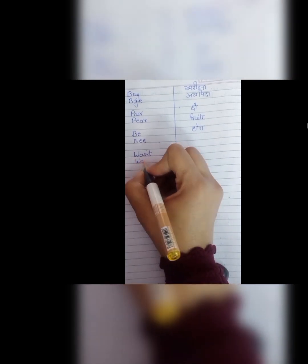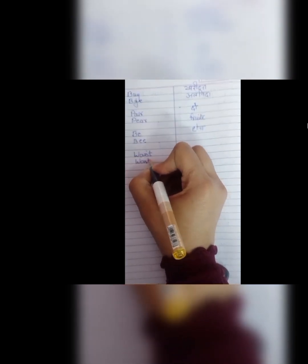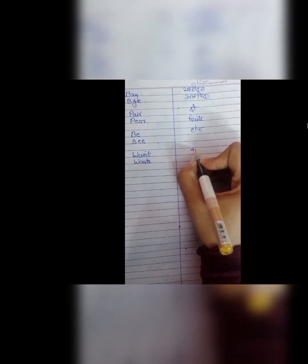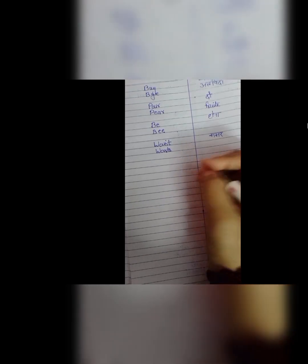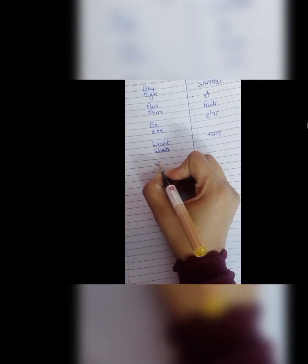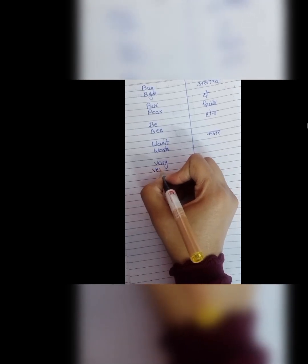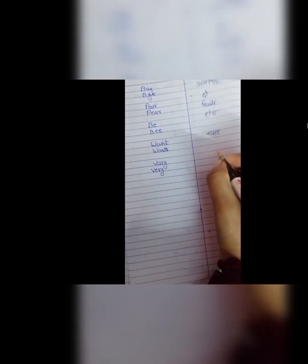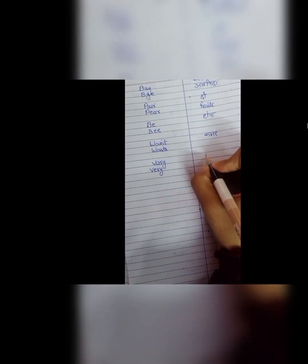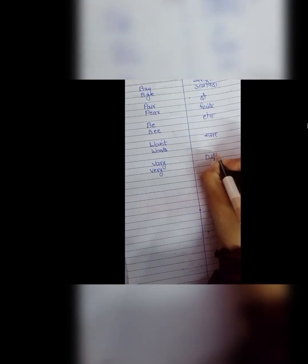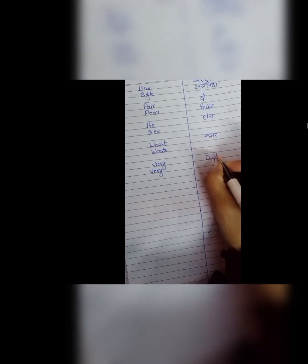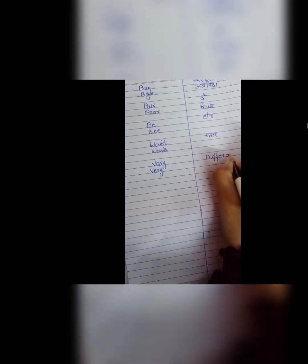Next is waist and waste. W, A, I, S, T, waist means hamari kamar. Jab hum apne jeans lene jaate hain jho waist size hoota hai means kamar ka size ye wali waist hai. And W, A, S, T, E, waste jho kharab chize hain jho waste chize hain hamari bekar chize hain woh hoota hai waste.